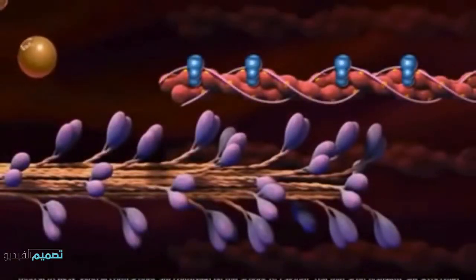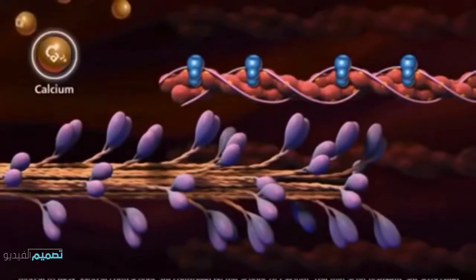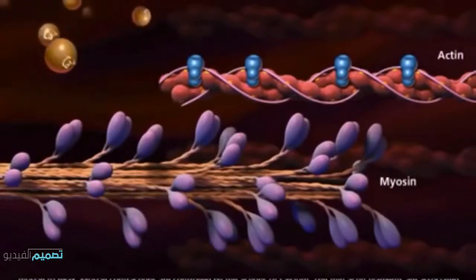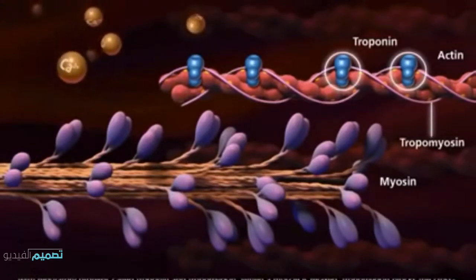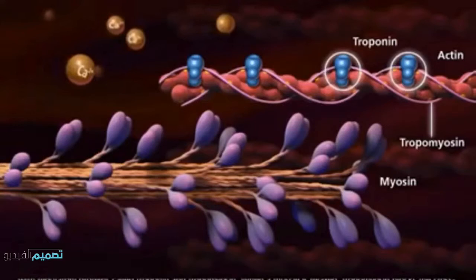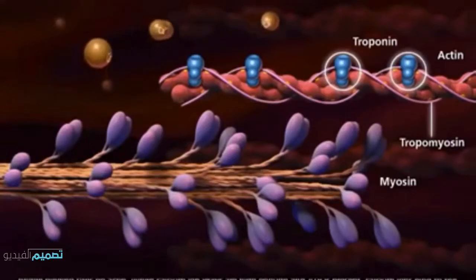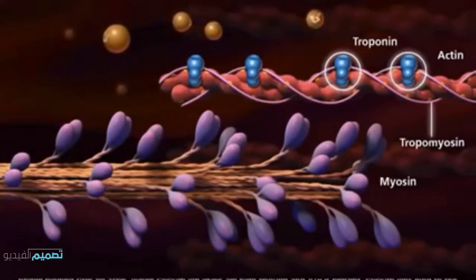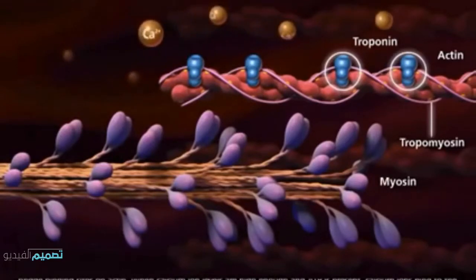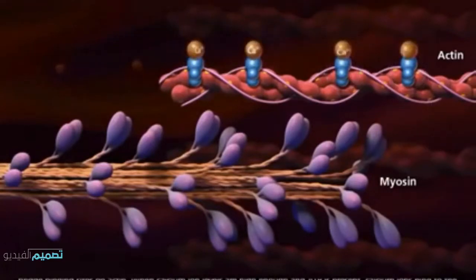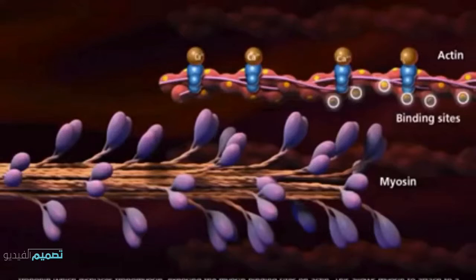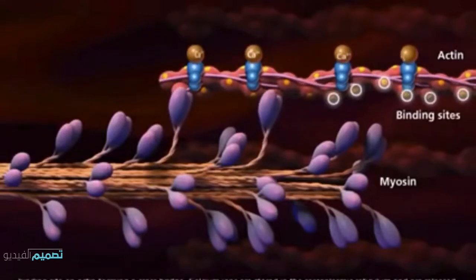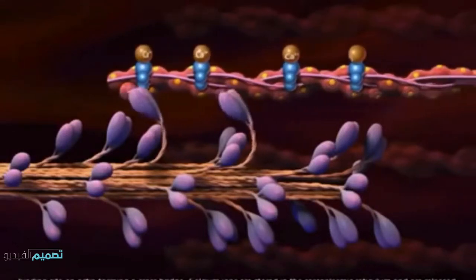Muscle contractions are controlled by the actions of calcium. The thin actin filaments are associated with regulatory proteins called troponin and tropomyosin. When the muscle is relaxed, tropomyosin blocks the cross-bridge binding sites on actin. When calcium ion levels are high enough and ATP is present, calcium ions bind to the troponin, which displaces tropomyosin, exposing the myosin binding sites on actin. This allows myosin to attach to a binding site on actin, forming a cross-bridge.